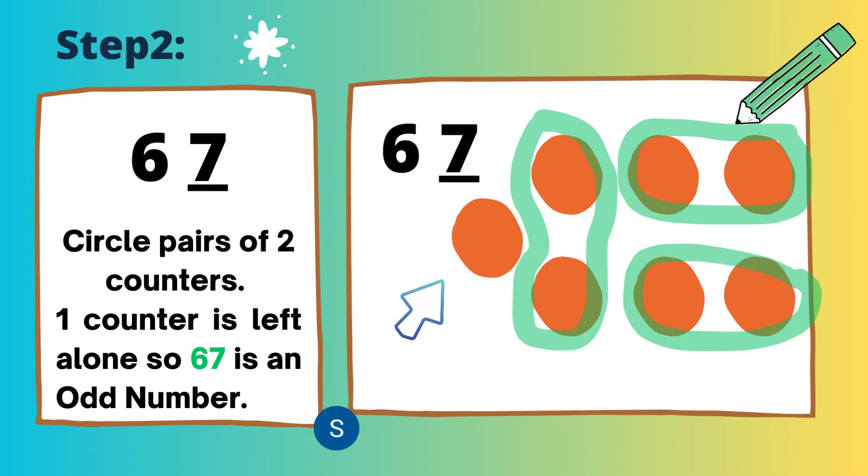Following Step 2, I have paired up two counters and made rings. Now here, one counter does not have a friend and it is alone, which means that 67 is an odd number.